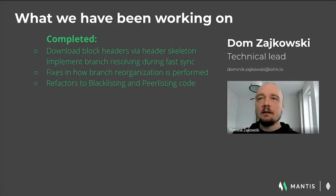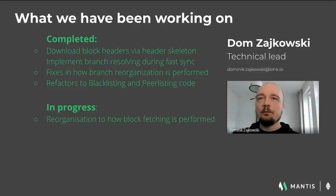We also improved how peer listing is shared between different parts of the client. It should now be harder to get stuck with a list of bad peers that prohibit successful state synchronization. For work in progress: a core mechanic of the client is block fetching. During work on checkpointing we identified that the current implementation should be improved, and this is an area of our focus.